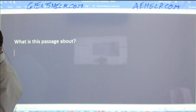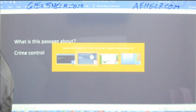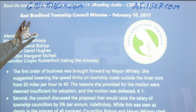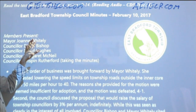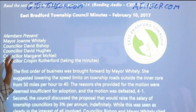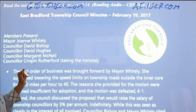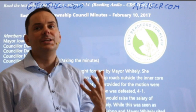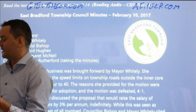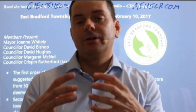Pachu says it's maybe about crime control. More generally, what is it about? We're talking about the East Bradford Township Council Minutes. These are the people at the meeting — Mayor Joanne Whiteley, Councillor David Bishop, Councillor David Hughes, Councillor Margaret McNeil, and Councillor Crispin Rutherford, who's taking these minutes. What are they discussing? What is the purpose of a town council meeting? It's to solve problems in the city or in the town and to develop the town by making it better.